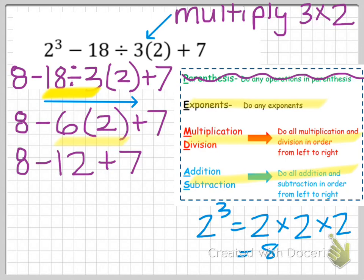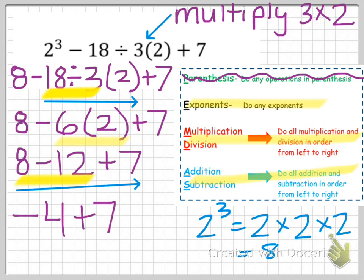Now I'm done with multiplication and division and move on to addition and subtraction. Same rule applies — I do them all from left to right, so I don't necessarily subtract before I add. Subtraction comes first: 8 minus 12 is negative 4, leaving negative 4 plus 7. The last step is addition: negative 4 plus 7 equals 3. My final answer is 3.